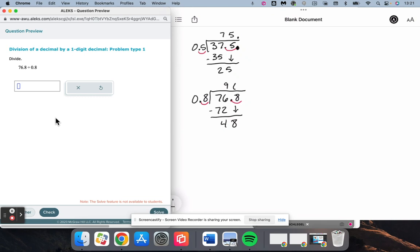8 goes into 48 six times. And this decimal right here is going to come straight up, giving us 96.